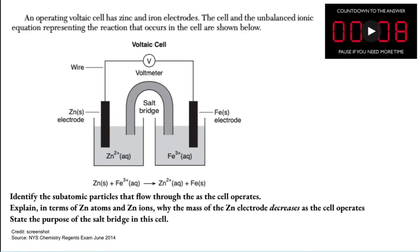You're probably going to want to pause the video here because this is a three-part question. An operating voltaic cell has zinc and iron electrodes. The cell and the unbalanced ionic equation representing the reaction that occurs in the cell are shown below. Identify the subatomic particles that flow through as the cell operates. Identify in terms of zinc atoms and zinc ions why the mass of the zinc electrode decreases as the cell operates. And state the purpose of the salt bridge in the cell. So pause the video and think about it.